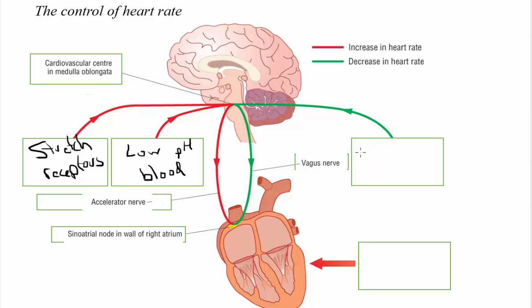On the other hand high blood pressure will be detected by the carotid sinus and that will have the effect of slowing down the heart rate.